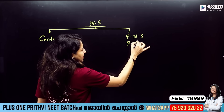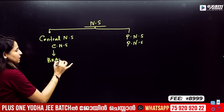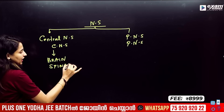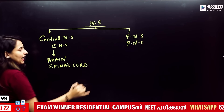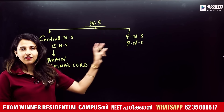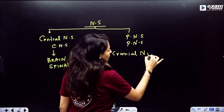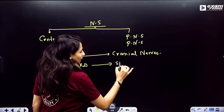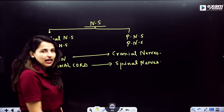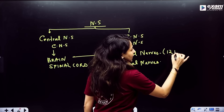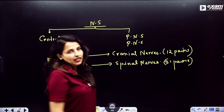What do we call it? Central nervous system and peripheral nervous system. The central nervous system is the brain and spinal cord. The brain and spinal cord give rise to peripheral nerves — cranial nerves from the brain and spinal nerves from the spinal cord. There are 12 cranial nerves and 31 spinal nerves, making up the peripheral nervous system.